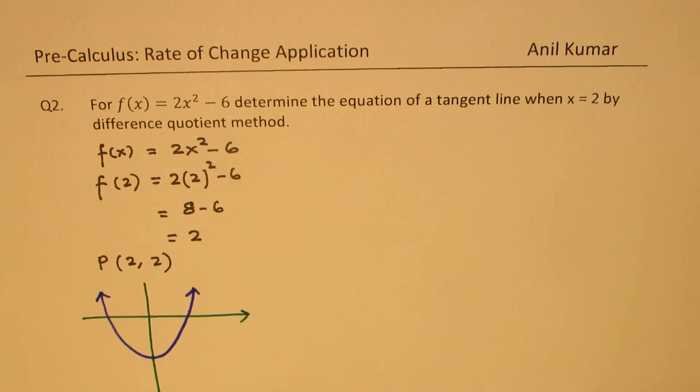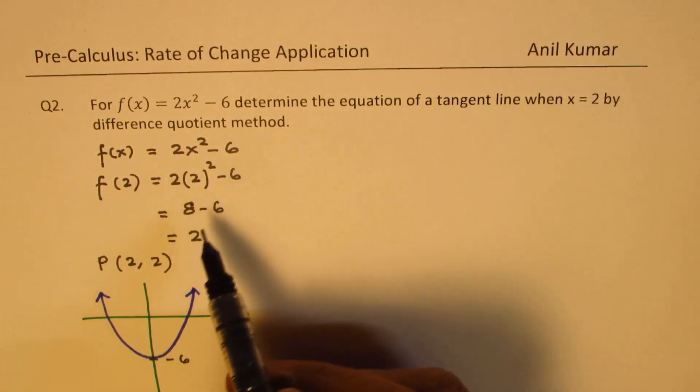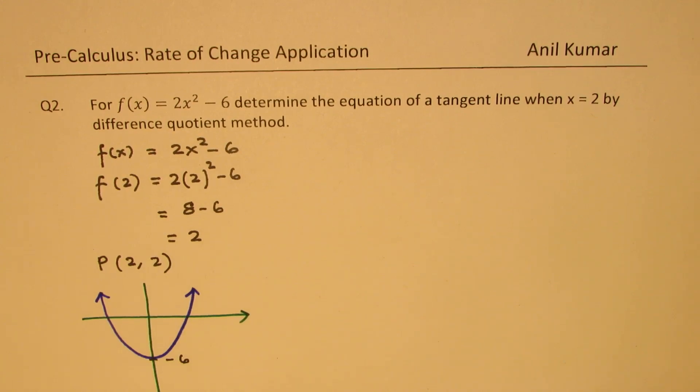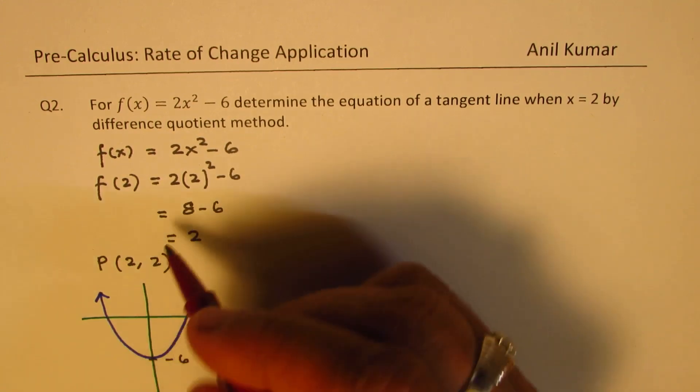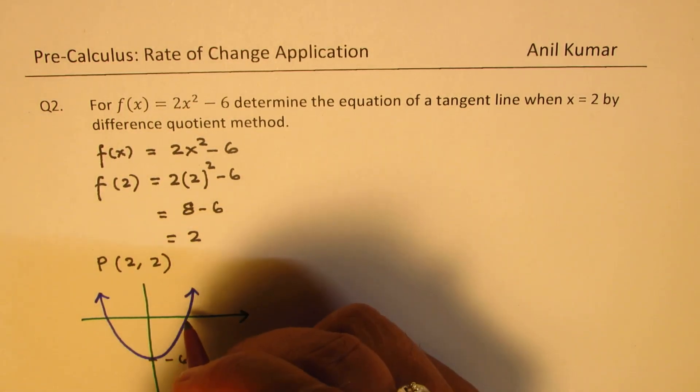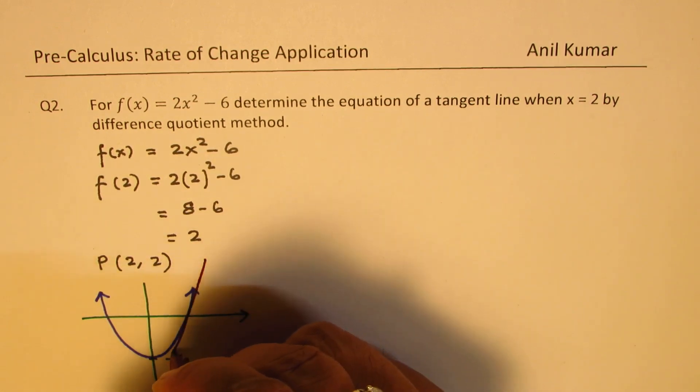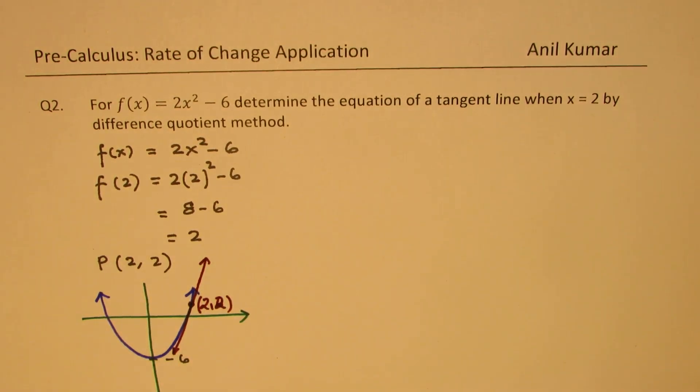So where this is minus 6. Now, 2 comma 2 means we have a point somewhere above in quadrant 1. And we need to find equation of the tangent line somewhere here. So we're looking for equation of this tangent line. Where this point here is 2 comma 2. So that's what we are interested in finding.